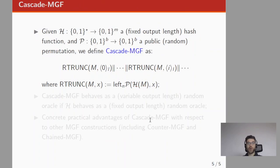Based on this, we propose a new MGF construction, the Cascade-MGF construction. We basically concatenate the output of several randomized truncation constructions which are applied on a message M and on an index i. The randomized truncation function depends on a public random permutation P and on a fixed output length hash function H.